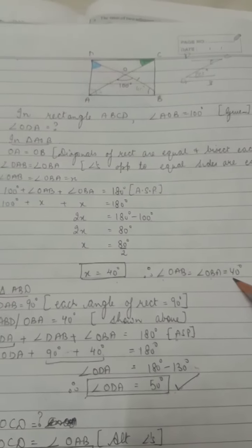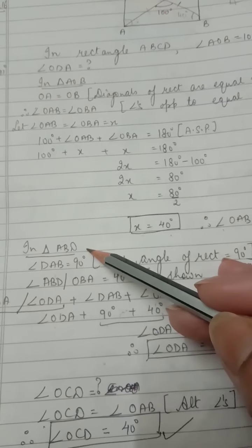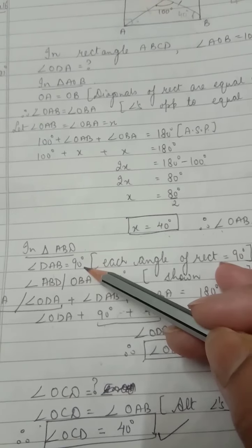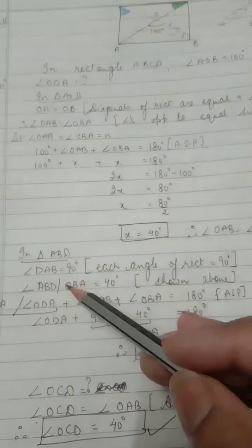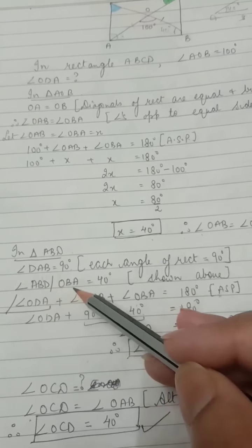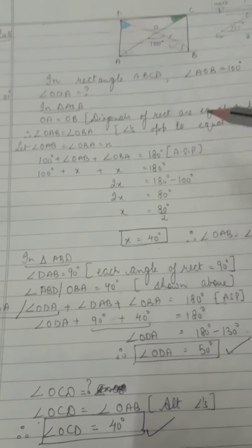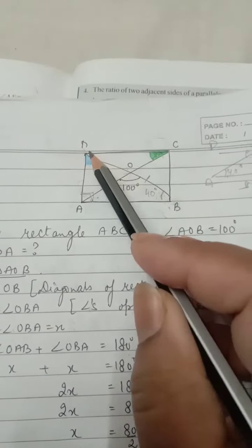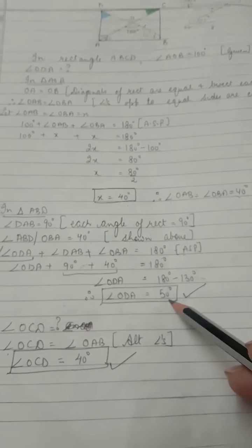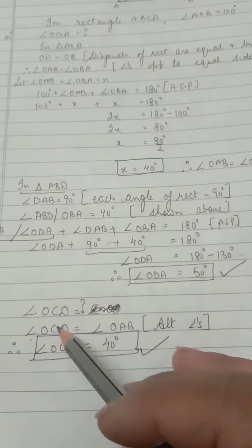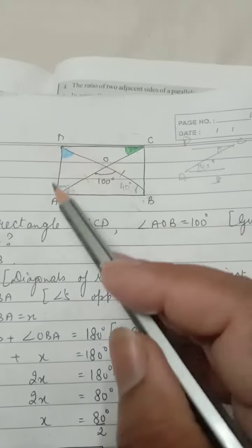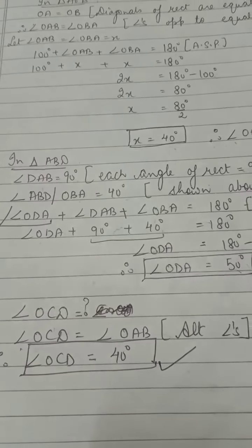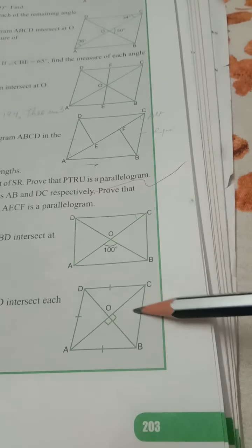In triangle ABD, angle DAB = 90° (each angle of a rectangle is 90°) and angle ABD = 40° (calculated above). Using the angle sum property, angle ODA = 180° − 90° − 40° = 50°. To find angle OCD: it equals angle OAB because they are alternate angles, so angle OCD = 40°.